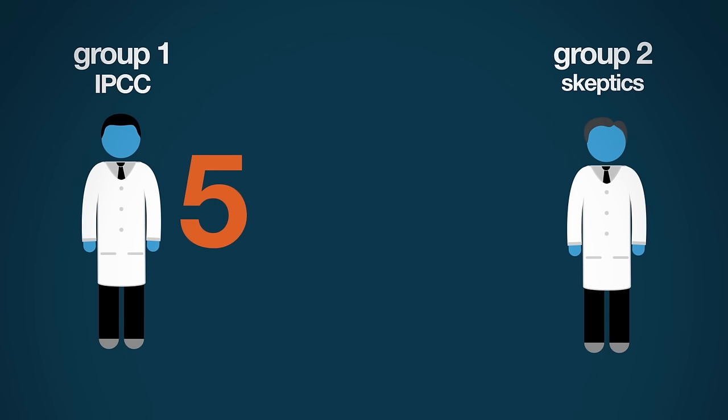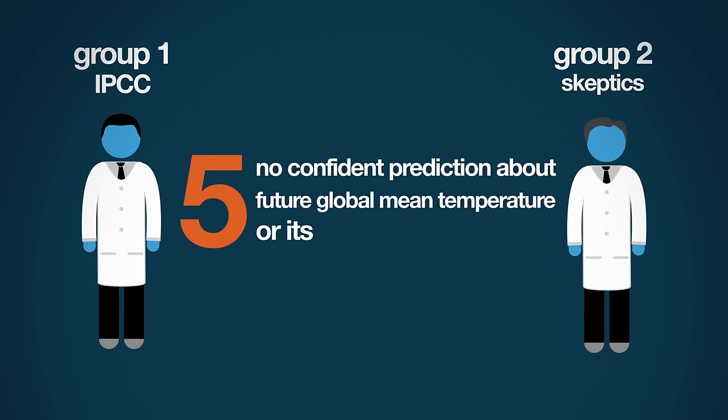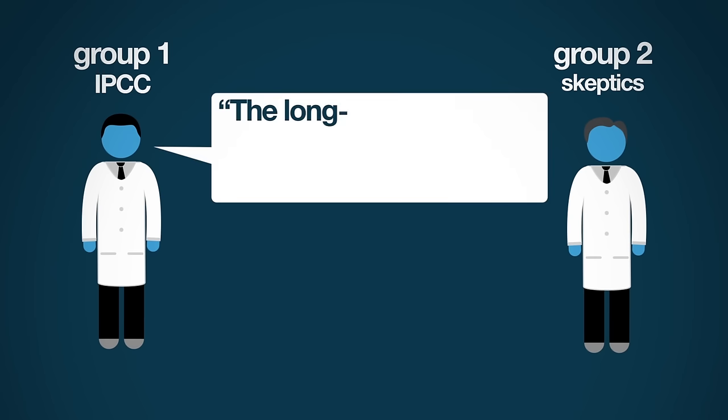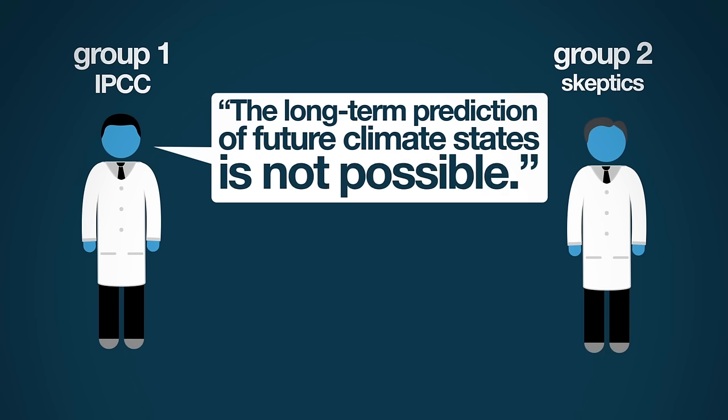Five, given the complexity of climate, no confident prediction about future global mean temperature or its impact can be made. The IPCC acknowledged in its own 2007 report that, quote, the long-term prediction of future climate states is not possible, end quote.